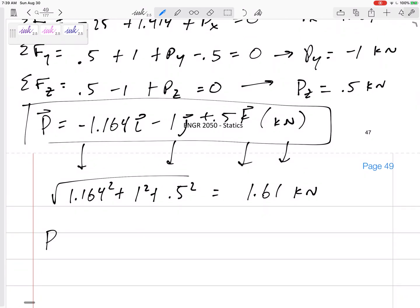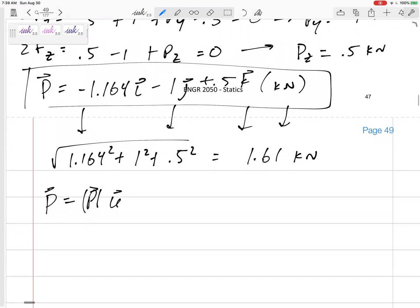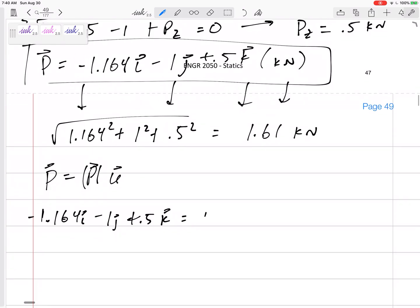And then how about the coordinate direction angles? P equals P U. So this negative 1.164, we did this a lot earlier on, minus 1 in the J, plus 0.5 in the K, equals 1.61 times cosine alpha I, plus cosine beta J, plus cosine gamma K.